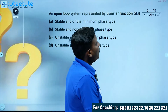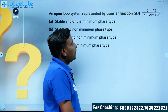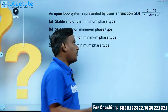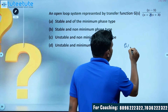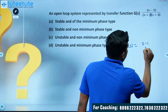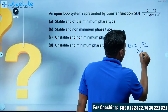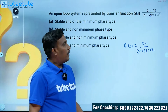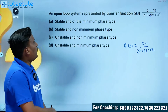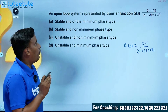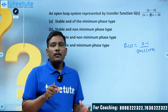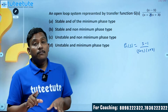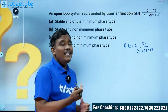The first question: an open loop system represented by the transfer function G(s) = (s-1) / [(s+2)(s+3)]. The options given are asking about whether it is stable or unstable, and whether it is a minimum phase system or non-minimum phase system.